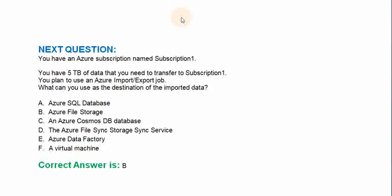You have an Azure subscription named Subscription 1. You have 5 TB of data that you need to transfer to Subscription 1. You plan to use an Azure import-export job. What can you use as the destination of the imported data? Option A: Azure SQL database. Option B: Azure file storage. Option C: An Azure Cosmos DB database. Option D: Azure File Sync service. Option E: Azure Data Factory. Option F: A virtual machine. The correct answer is Option B.